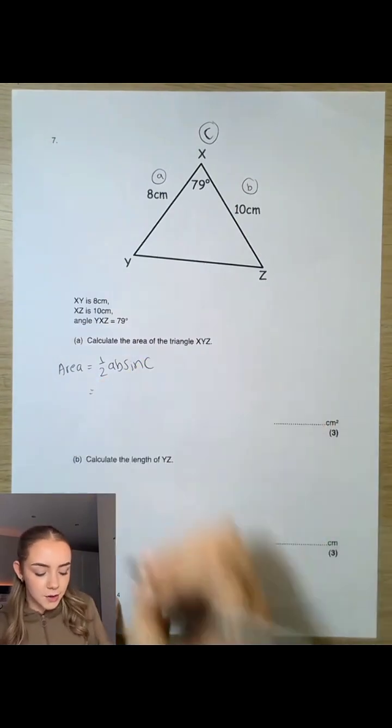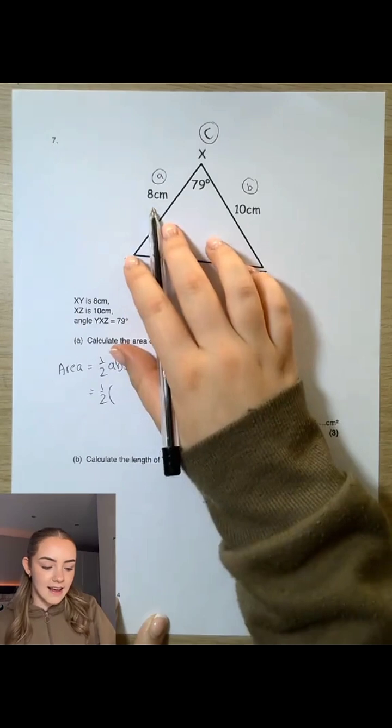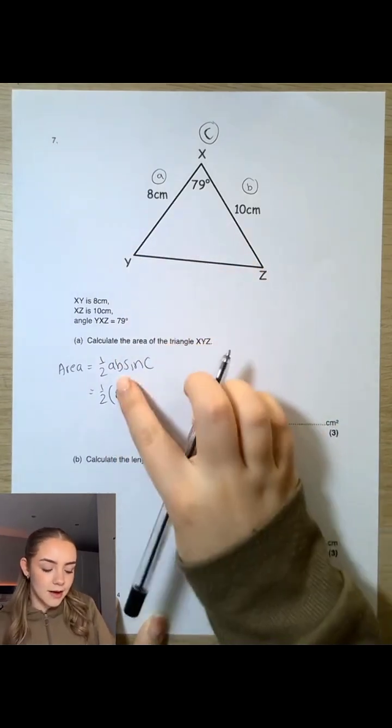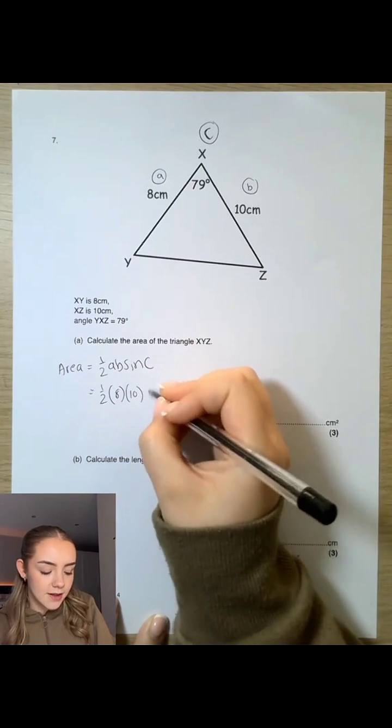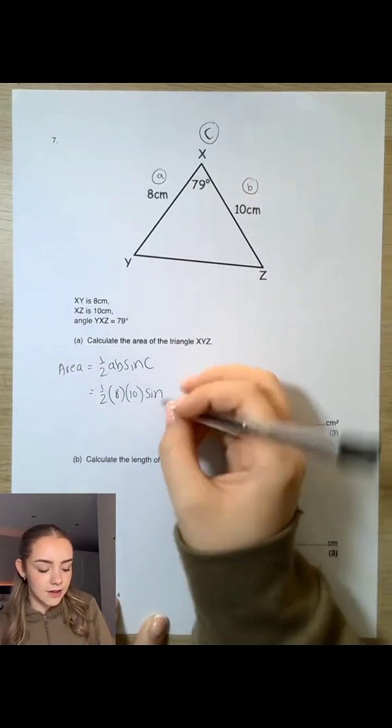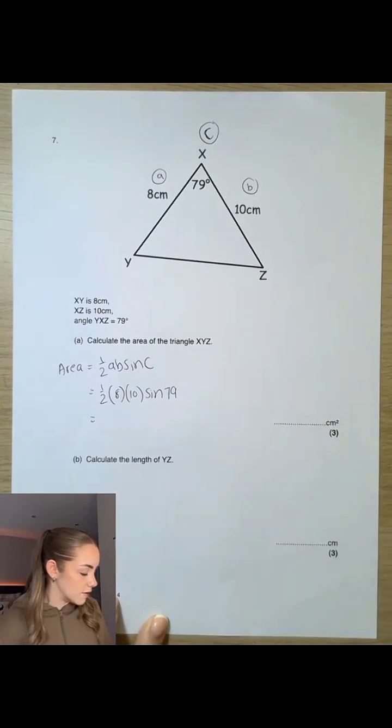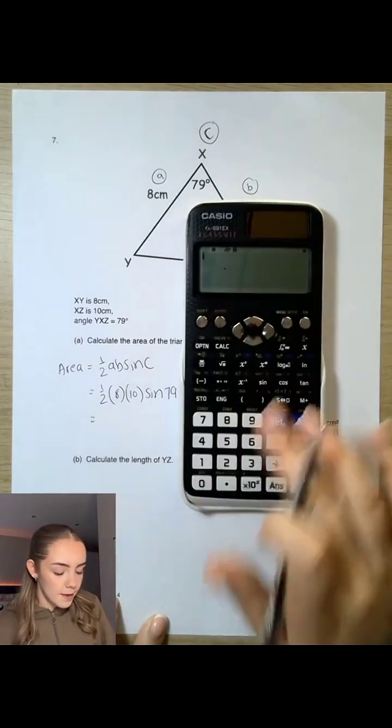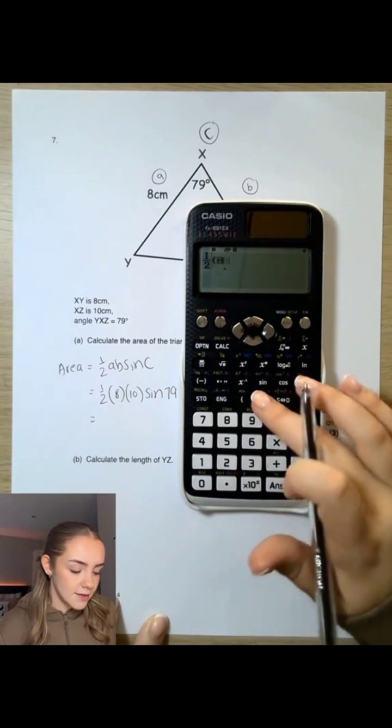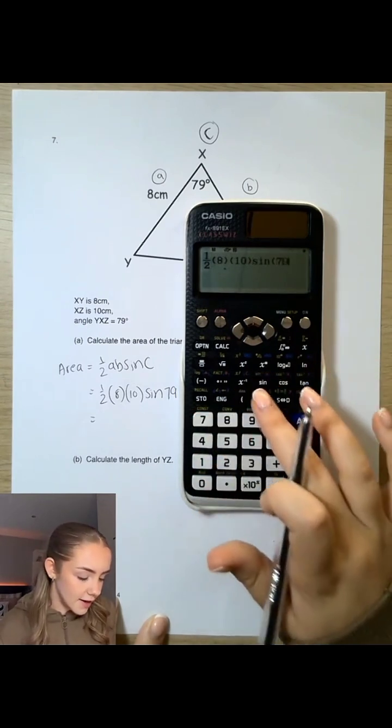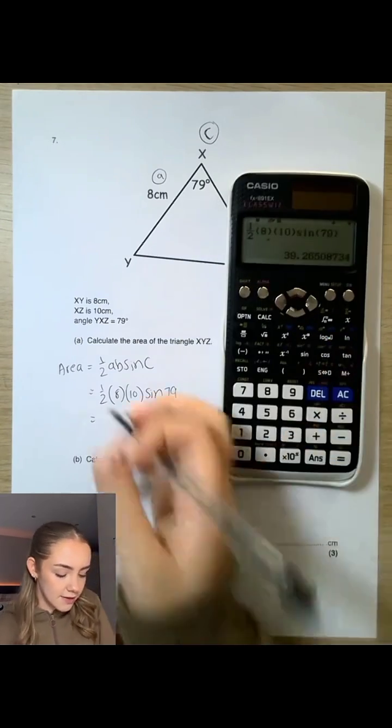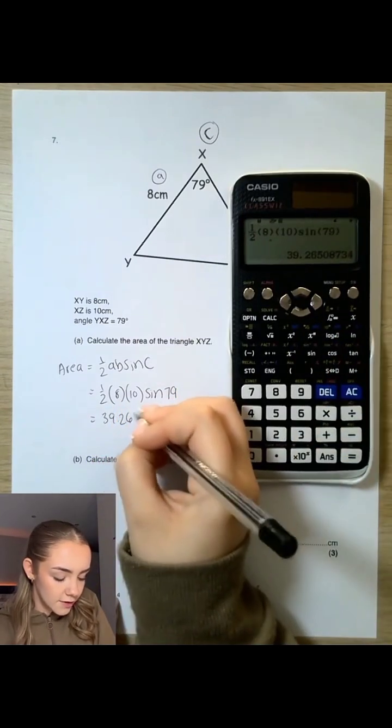Literally stick it into your equation. So the area is a half times by side a, which we've labeled as 8, times by side b, which we've labeled as 10, times by sine of angle c, which is 79. So we type all of that in. We've got half times 8 times 10 times sine 79, which is 39.265.